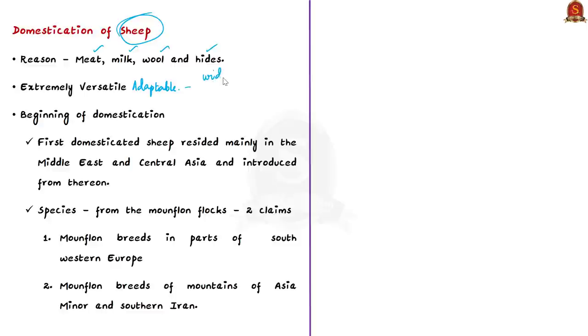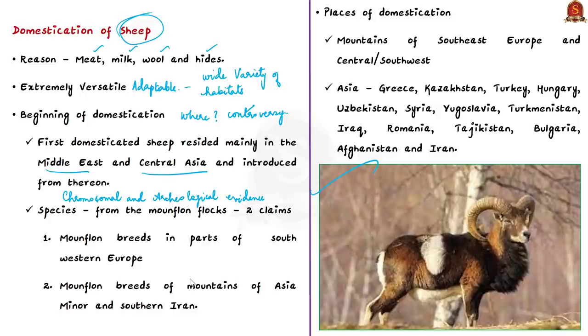Coming to the core idea of the news article here, there was always a controversy when it comes to the debate on where sheep domestication started. According to many sources and researchers, the first domesticated sheep were said to reside mainly in the Middle East and Central Asia, and from there they were introduced everywhere. The chromosomal and archaeological evidence indicated that the first sheep domesticated were from the mouflon flocks - a flock of wild sheep.